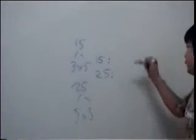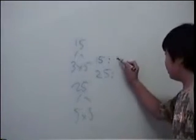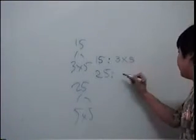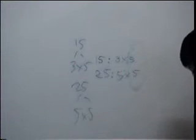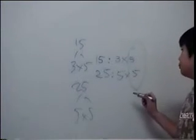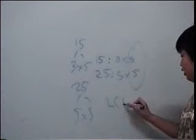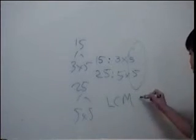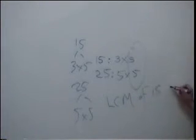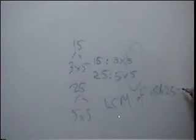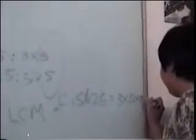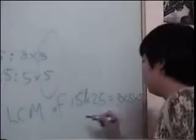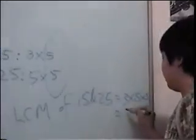Again, we're going to list out the factors. So the least common multiple of 15 and 25 equals 3 times 5 times 5, which equals 75.